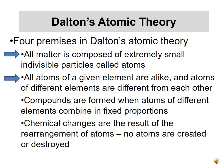His second premise is that all atoms of a given element are alike, and atoms of different elements are different from each other. So all carbon atoms look just alike, all hydrogen atoms look just alike, all nitrogen atoms look just alike. But a nitrogen atom is different from a carbon atom — you could distinguish those two if you could actually see the atoms.